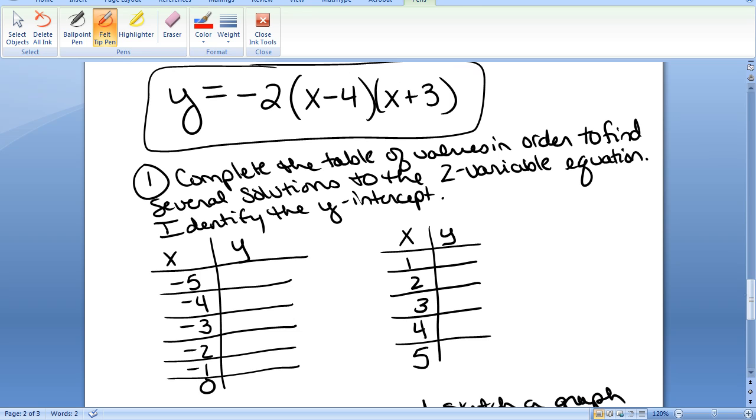Let's do another example. This time, I have the equation y equals negative 2 times the quantity x minus 4 times the quantity x plus 3. Again, I want to complete the given table of values. We're given x is negative 5, so I go to the equation, and I plug in negative 5 for x. Then we'll plug in negative 4, then negative 3, and so forth. I'll go ahead and quickly fill in these y values.